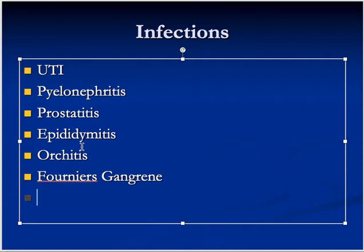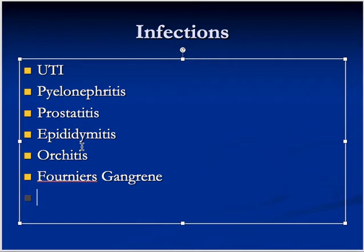Pyelonephritis is more common in females. It presents with fever, pain, and rigors. Nowadays we just give antibiotics to the patient, which have very good action. If there is an abscess, we drain it — this is called pyonephrosis (pyo = pus, in the kidney). They can do open nephrostomy or nephrectomy if the kidney is destroyed, along with antibiotics.